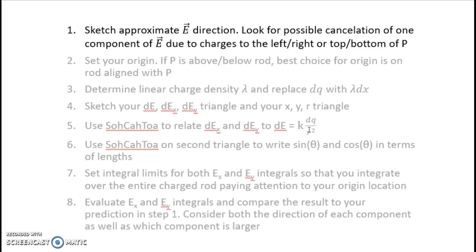So let's summarize the steps we went through for this problem. We started out sketching the approximate direction of the electric field. And there we're looking at any cancellation, either complete cancellation or a partial cancellation like we had in this problem for one of the components of the electric field. And we're figuring out, do I need both x and y components of the electric field? Or might one of them completely cancel and be zero? We set our origin next. We line it up with point P so that any cancellation that happens for points to the left or the right of P, points above or below P will work out naturally for us.